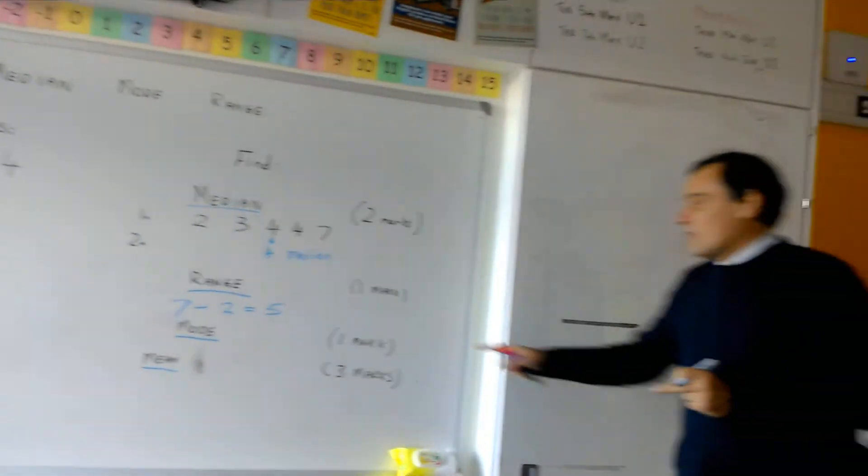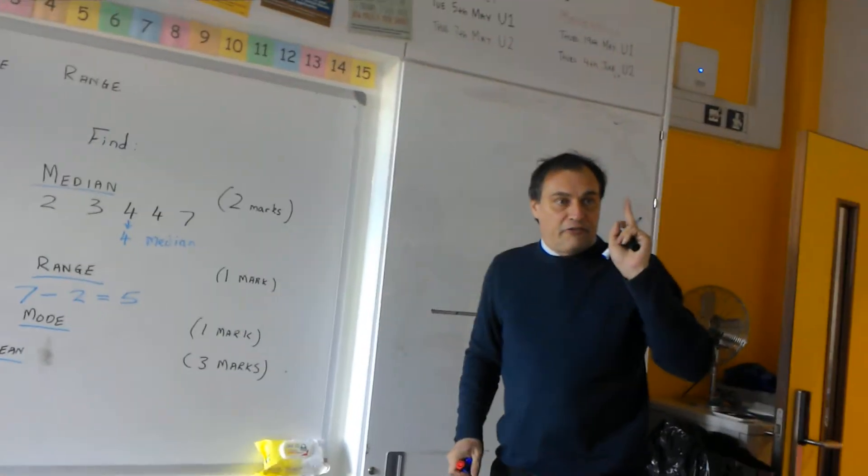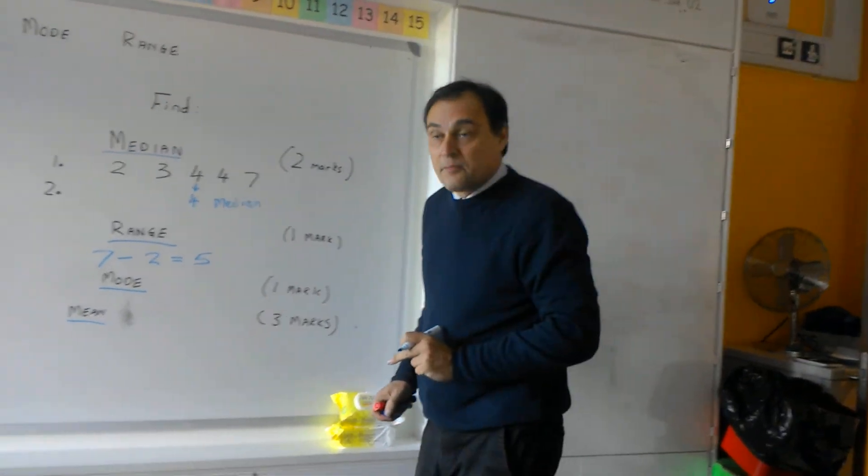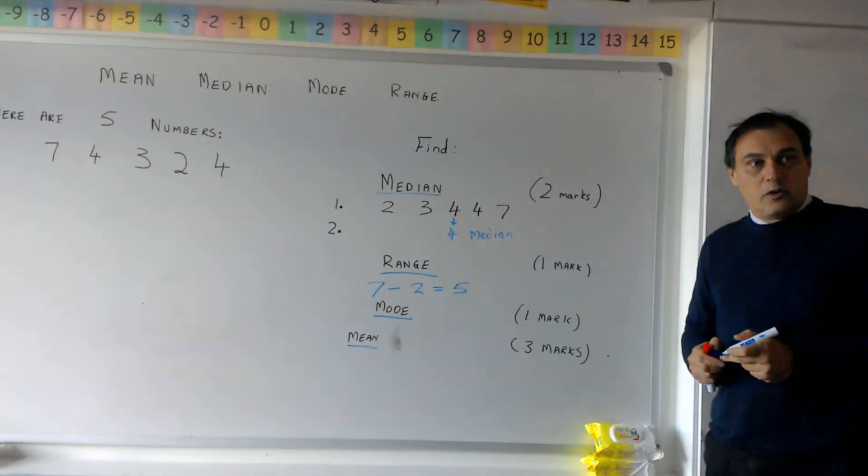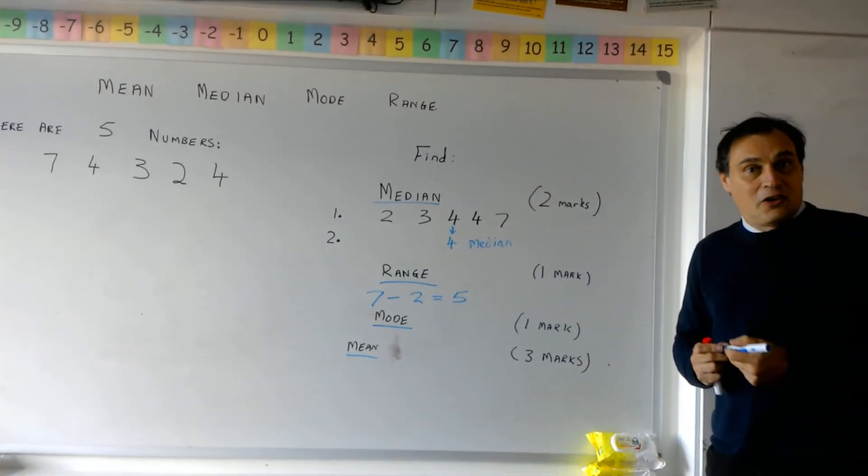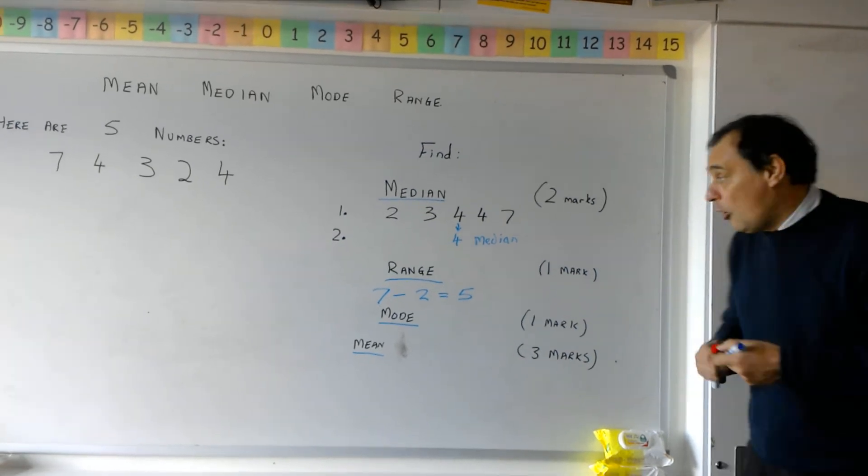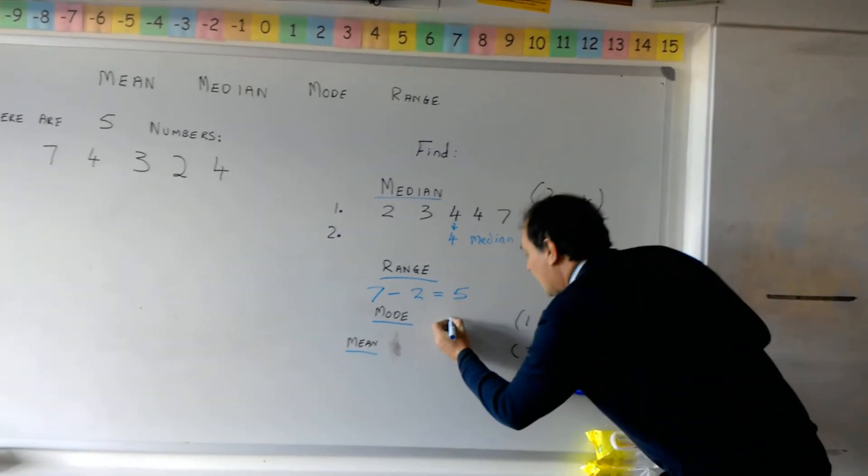So now the mode. That's only one mark. So we've got to find only do one job for that. The mode is the number in that list that you can see the most. Which one is the mode going to be? Four. Brilliant. So the mode is four.